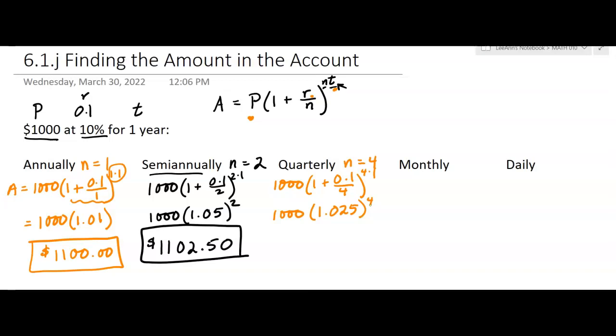You could always do that parenthesis part on your calculator, just go one plus 0.1 divided by 4. Then I can raise that to the fourth power and times it by 1,000. That just follows the order of operations. A lot of times students like to write it out step by step. But at the end, I'll show you how to do it so you can just put the whole thing in your calculator. I get $1,103.81. It doesn't round up. So I'm making a little bit more money, another $1.31.